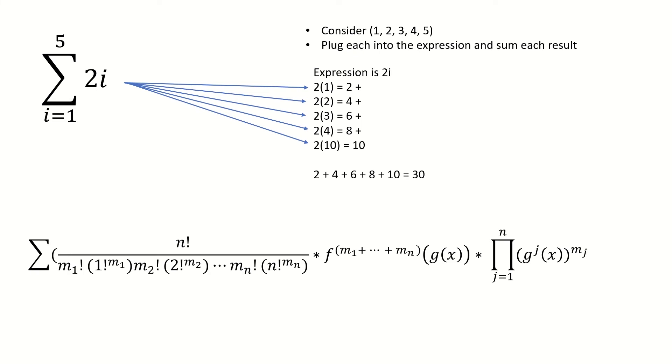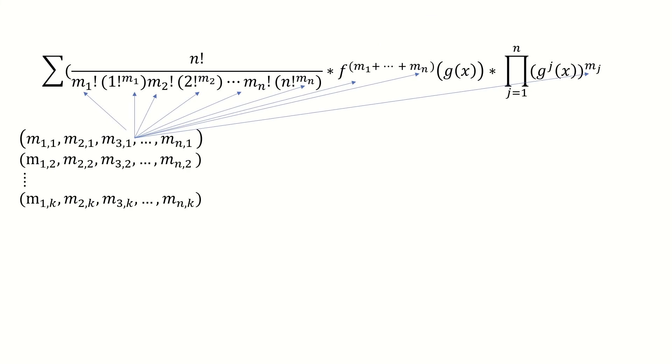In the Faa di Bruno formula sum, however, instead of plugging in a single number from a set of numbers, like how we plugged in 1 through 5 from the set 1, 2, 3, 4, 5 into the expression 2i, we are plugging in sequences of numbers m1 through mn from a set containing some number k of different sequences of numbers m1 through mn that satisfy the following condition.